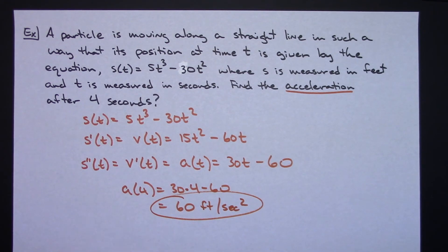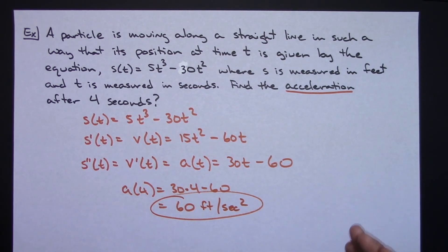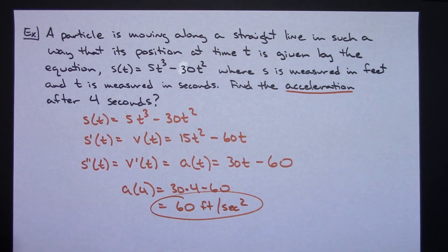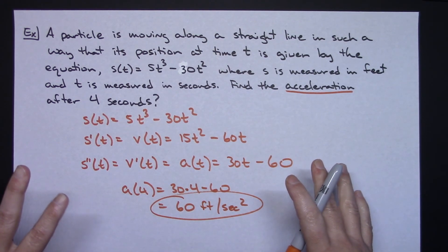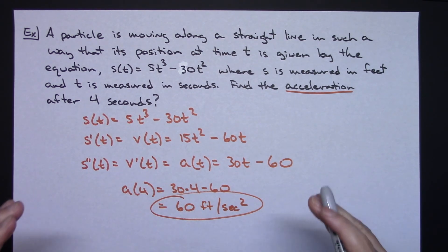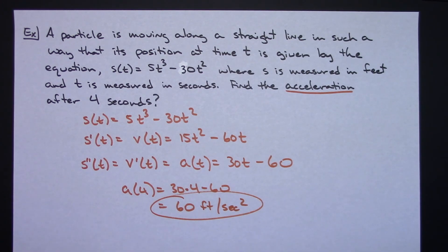Those were just a couple of examples going over the relationship between the position function, the velocity function, and the acceleration function. This is usually just some really simple questions they throw in early into a Calc 1 class, right after you've learned how to take the derivative.